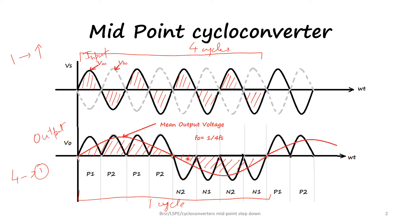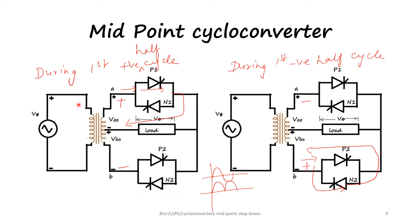Let us see the circuit operation for midpoint cycloconverter step down. During the first positive half cycle of the input supply, this point is plus and this point is minus. If during that time P1 is given the triggering pulse, the current flow will be from A, through P1, through the load, back to the supply.